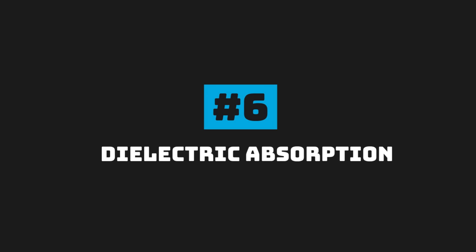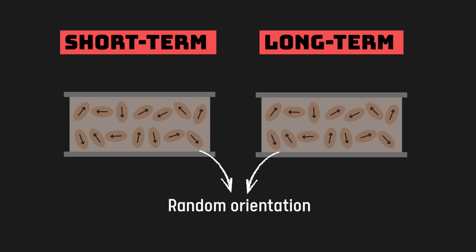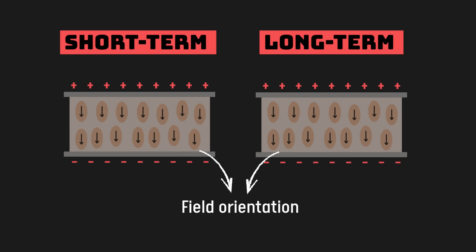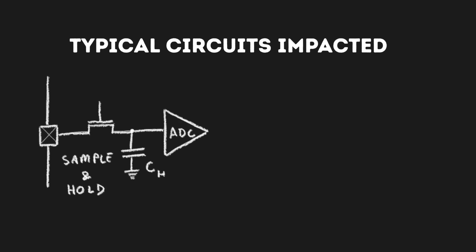Dielectric absorption is the effect where capacitors lose their capability of fully discharging. It refers to a memory MLCCs display when kept charged for very long periods of time. This happens because the molecules within the dielectric retain their orientation in the same direction as the field, even if the field is removed. Over time, it may impact precision and accuracy in circuits such as analog to digital converters and in analog integrators.